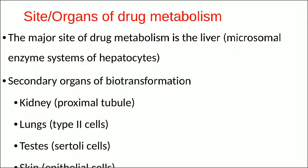What are the prominent sites of drug metabolism? The major site of drug metabolism is the liver. The secondary organs of biotransformation include the kidney, lungs, testis, and skin. In the kidney it is mainly the proximal tubule; in the lungs it is type 2 cells; in the testis it is Sertoli cells; and in the skin it is mainly the epithelial cells.